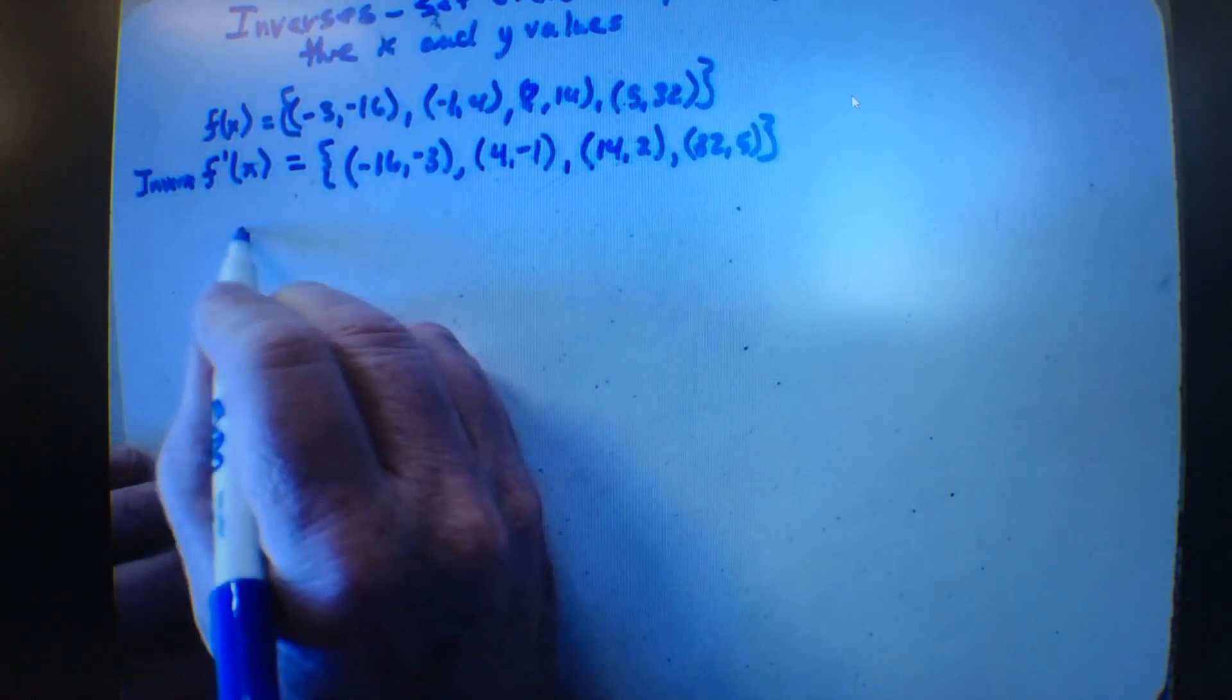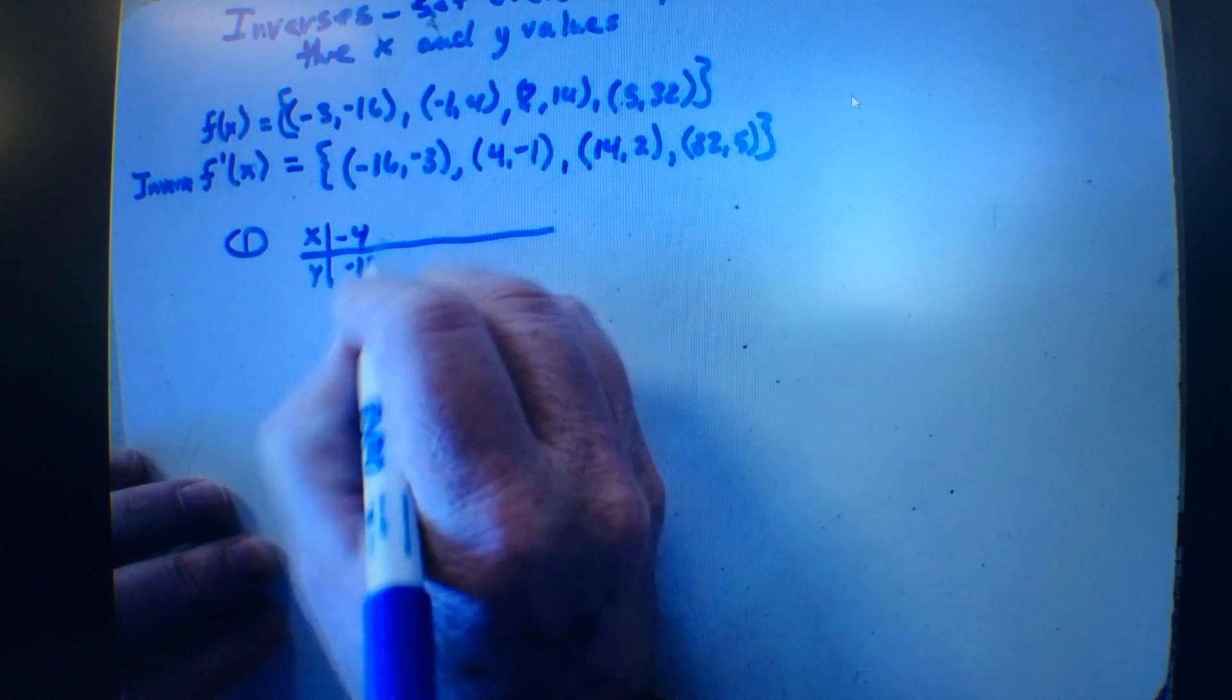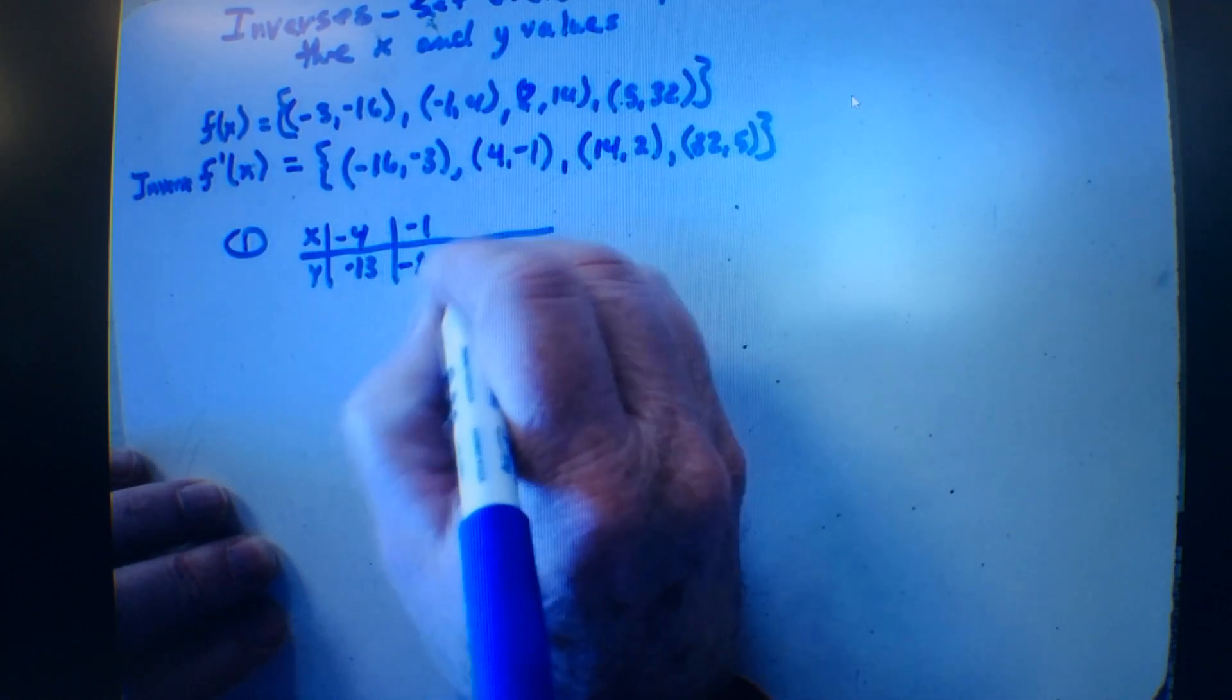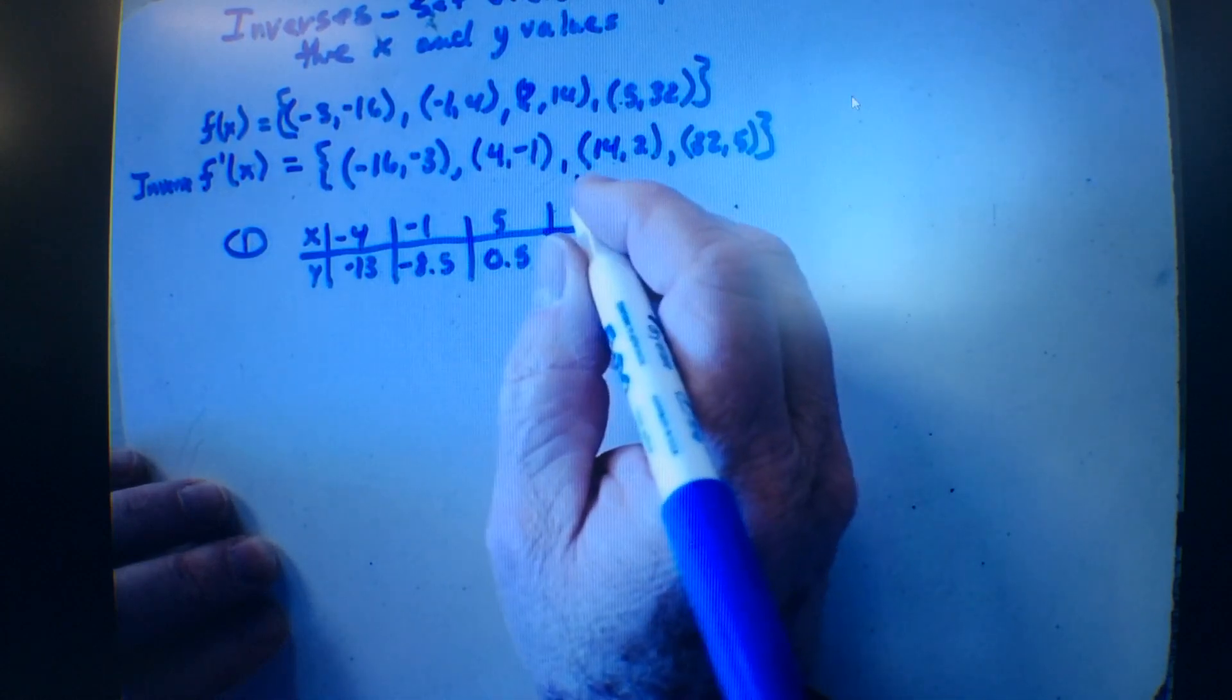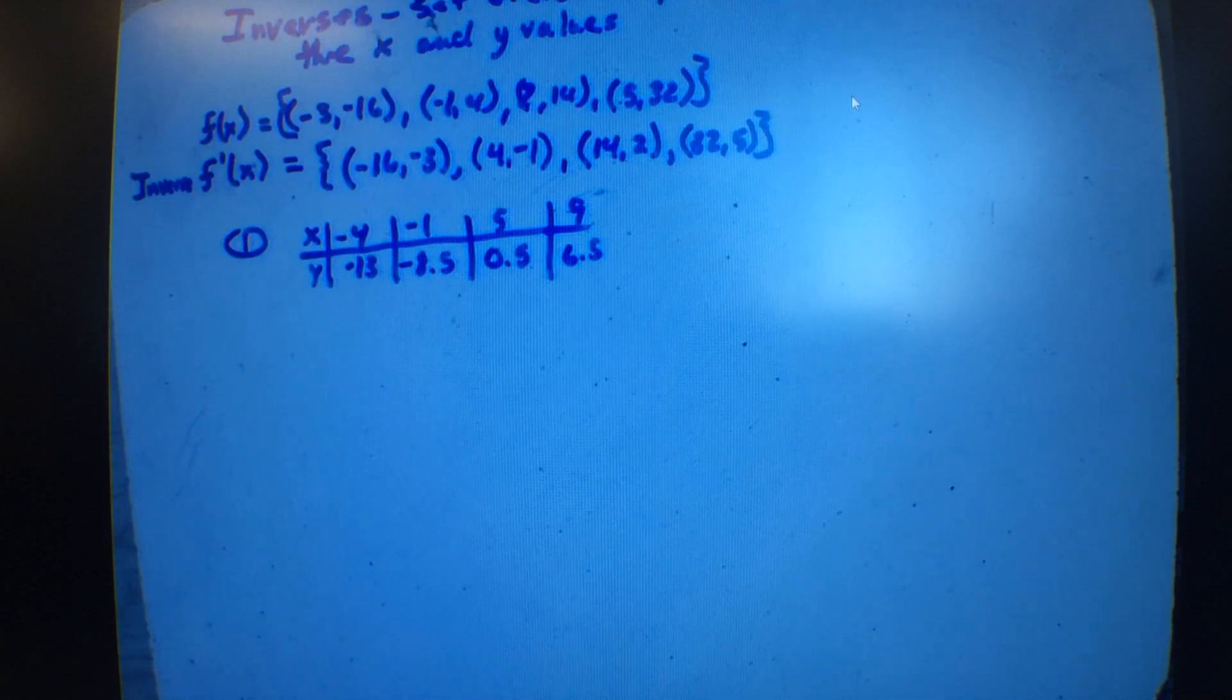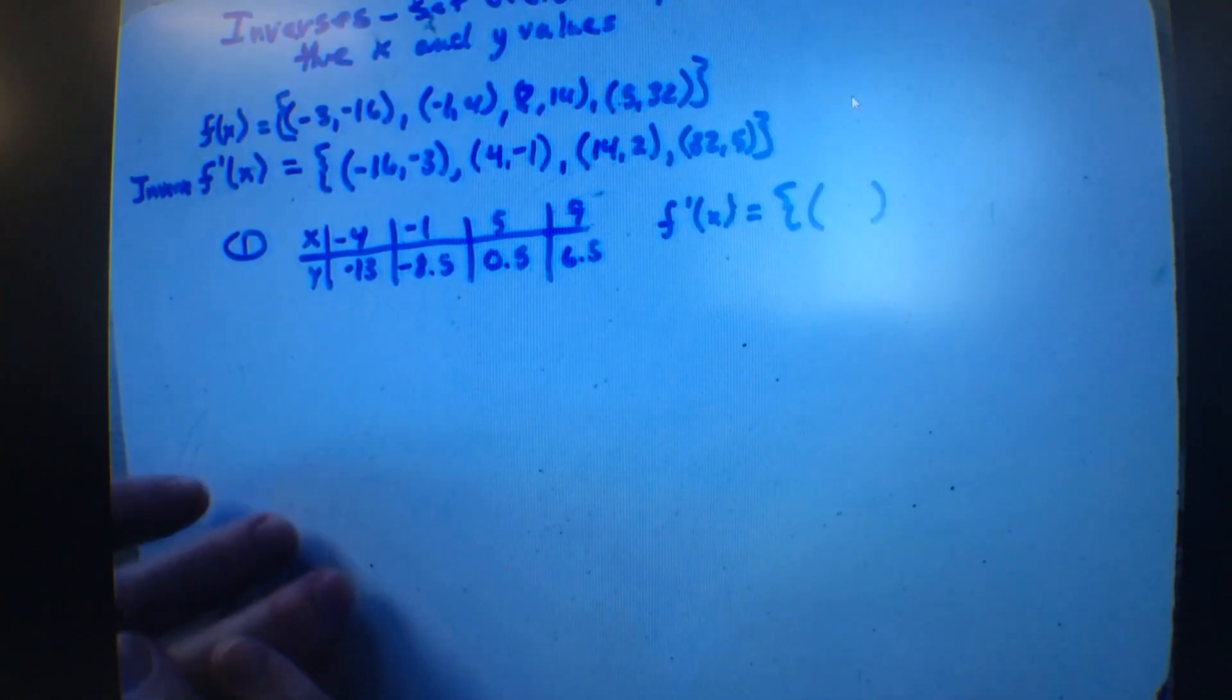Do you understand that? Okay, so I'm going to give you a chart. An x, y chart. Mine goes across here. Negative 4 and negative 13, negative 1 and negative 8.5, 5, 0.5, and 9, 6.5. What I want you to do is I want you to write an inverse out of a set of ordered pairs. So I want to know what the inverse of this is. We'll call it F inverse. So squiggly. What would be my first ordered pair if I'm finding the inverse? Jackson?